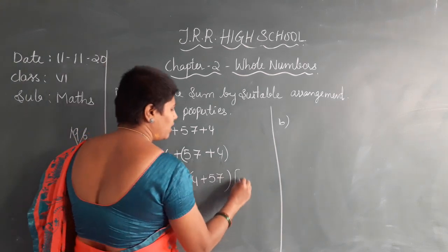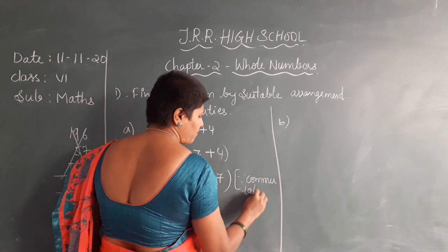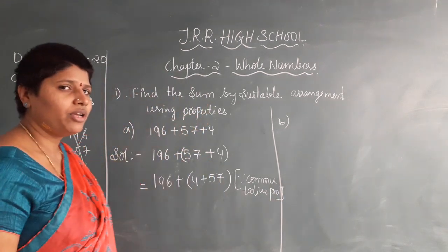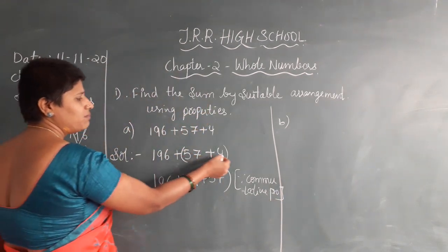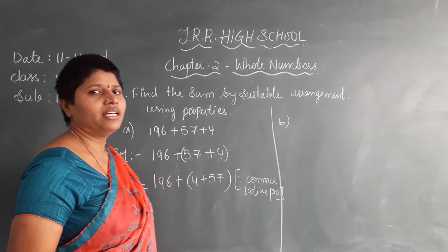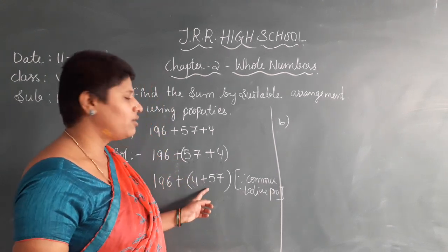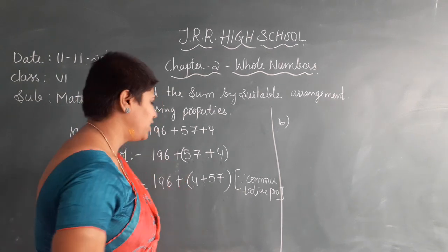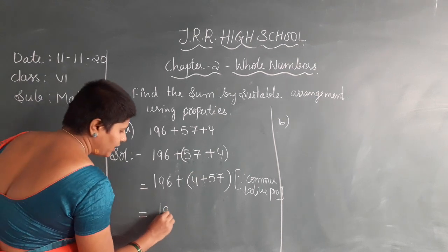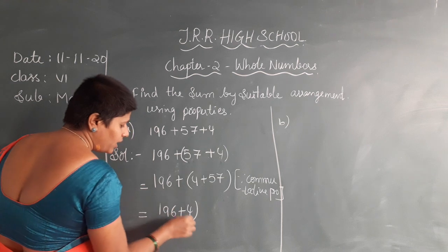By using your commutative property. So what is commutative property? A plus B is equal to B plus A. Though you have changed the order, the sum will not be changed — that is what we learn in the property. Here I have also changed by using this commutative property. Now I am going to write it as 196 plus 4, keep it in brackets.